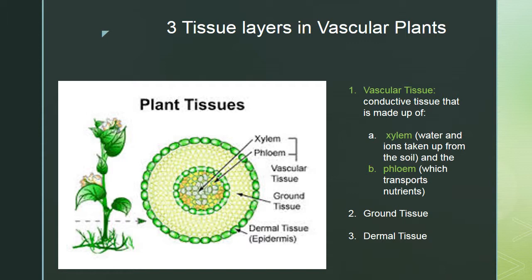Looking at a diagram of these tissues: the dermal tissue on the outside comes from the protoderm meristem; the ground tissue making up the bulk of the plant comes from the ground meristem; and the vascular tissue in the center — xylem and phloem — comes from the procambium. Those are the three apical meristems and the three primary tissues they produce.